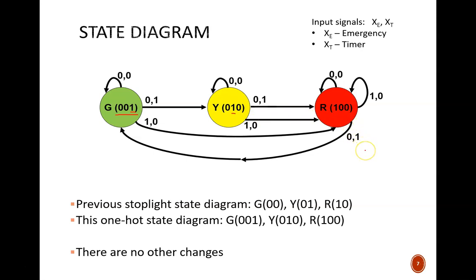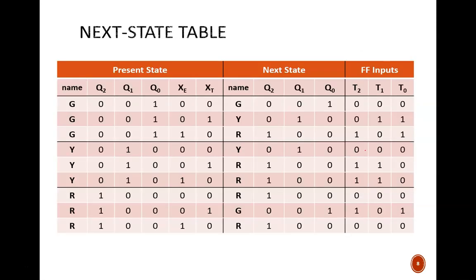The state diagram leads directly to this next state table. By adding one more bit to our state codes, we have one more Q column. Here it's Q2. And that means one more flip-flop instruction, T2. Note that every time we see state green, the three-bit code is 001. For state yellow it is 010, and for state red it is 100.